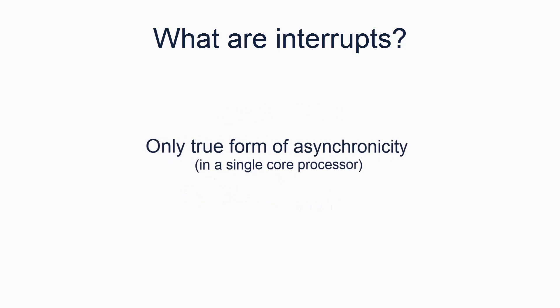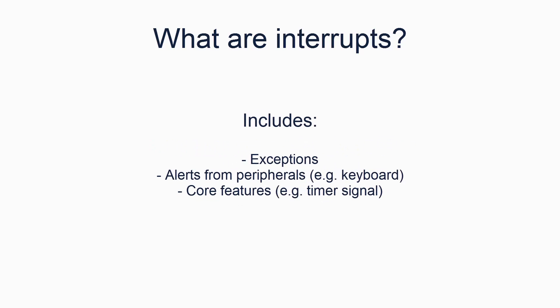Interrupts are the only true form of asynchronous programming we can do on a single core. Interrupts cover everything from exceptions to delayed processing traps, to peripheral signals such as a USB device, a mouse or a keyboard, and of course core features such as the timer, which enables scheduling of processors and threads.